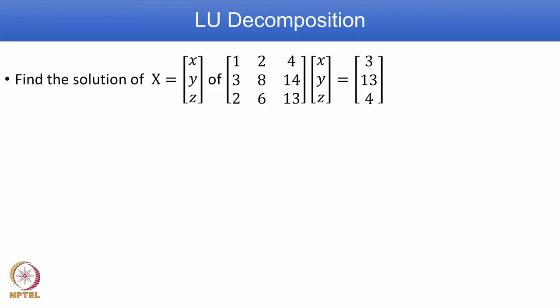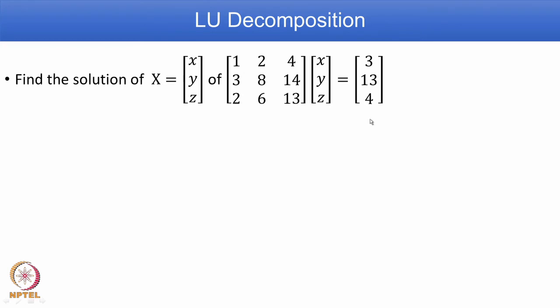Let us explain the LU decomposition procedure with an example. Find the unknown vector x, y, z given the coefficient matrix with entries 1, 2, 4 / 3, 8, 14 / 2, 6, 13, and the right-hand side matrix B as 3, 13, 4.